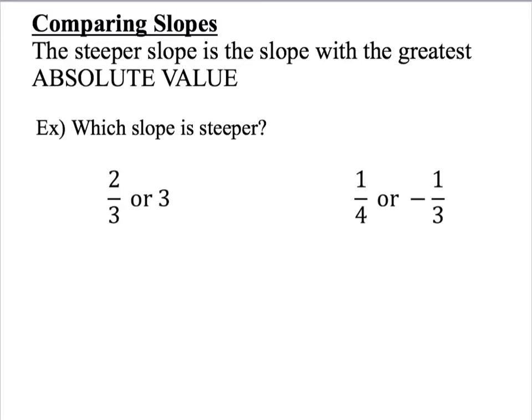Now let's take a look at these two examples. Which slope is the steepest, 2 thirds or 3? Well if we look at what we just talked about, the steepest slope is the slope with the greatest absolute value. Well both of these are positive, so they're already in their absolute value form. So then which number is the largest? That would be 3. So the line with slope 3 has the steepest slope.